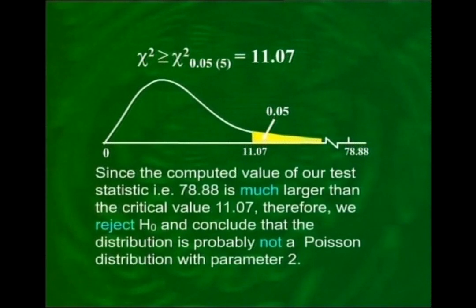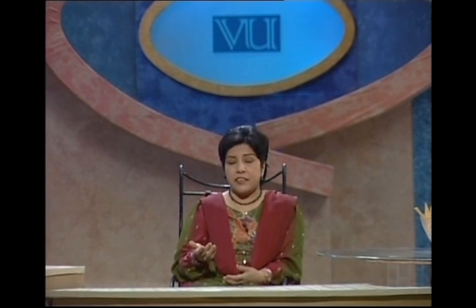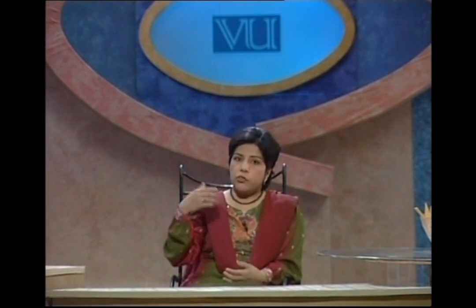Since our computed value of 78.88 is much larger than the critical value 11.07, we reject the null hypothesis and conclude that it is not a good fit. In fact, 78.88 is so much larger than 11.07 that the result may even be highly significant. I encourage you to look up the chi-square table for 5 degrees of freedom under 1% alpha and verify this for yourself.